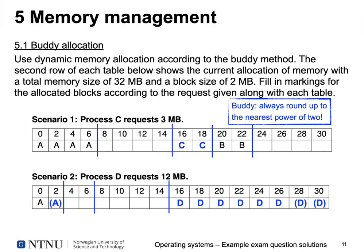Scenario two had a different initial condition with the first few megabytes allocated by A. Process D requests 12 megabytes, so we round up to the next power of two which is 16 megabytes. We need to find a free 16-megabyte block aligned to a 16-megabyte border — that's just the second half of our memory. We place the 12 megabytes there and waste 4 additional megabytes because of rounding up.